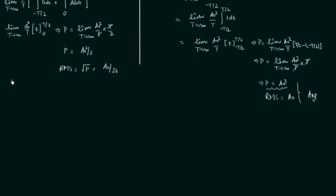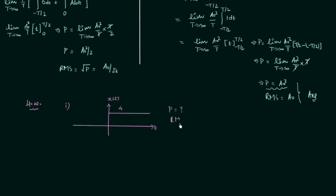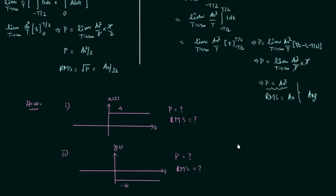Now I will give you two homework problems based on what we have learnt in this lecture. The first signal has a waveform shown on screen — call it x(t) — and you need to find the average power and the RMS value. The second signal has a waveform at a level of minus 6 — call it y(t) — and again you need to find the average power and the RMS value.